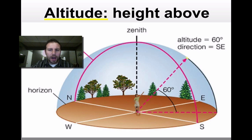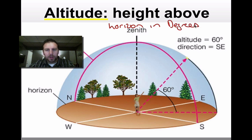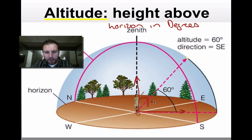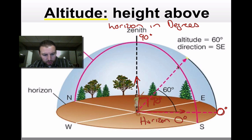Our altitude is our height above the horizon measured in degrees. Our zenith, if we make an angle with the ground looking at the horizon and then straight up, we would have a 90-degree angle. So the zenith is always 90 degrees and the horizon is always zero degrees. Anything in between is a judgment call — is it halfway looking up? In this scenario, we're looking at this little star right here, this little yellow spot.